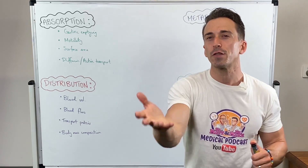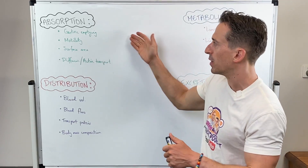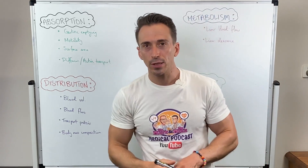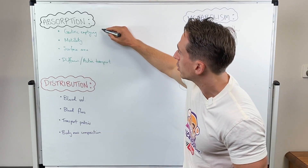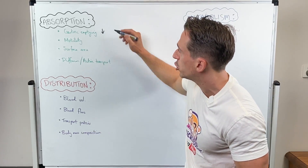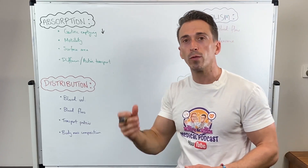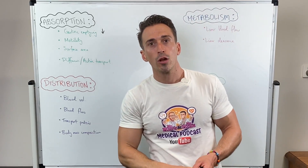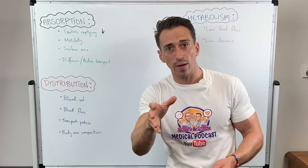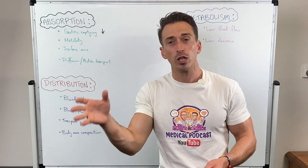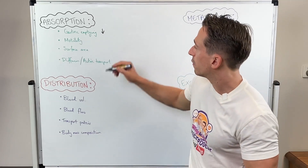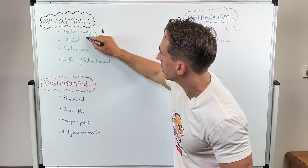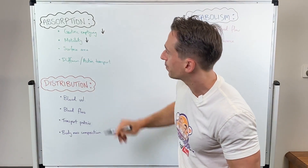How are these factors different for the older person? Gastric emptying is actually slower — there's reduced movement of products through the various phases of the GIT. Motility is also reduced for the older person.